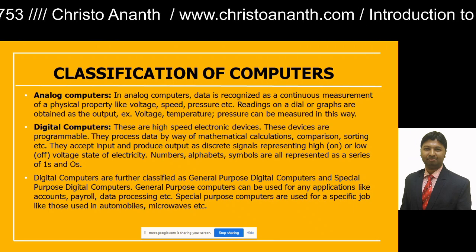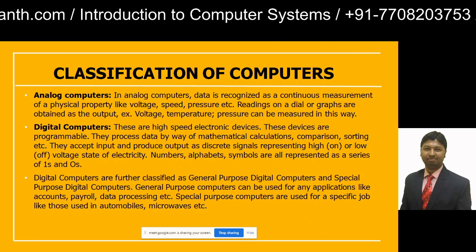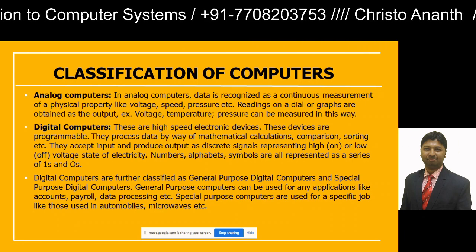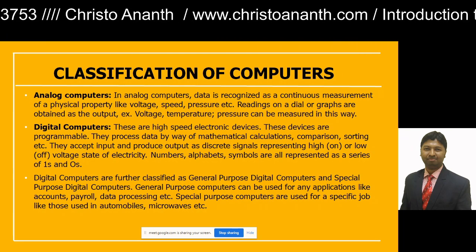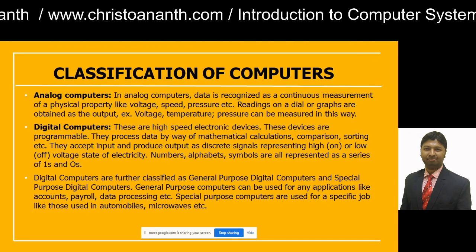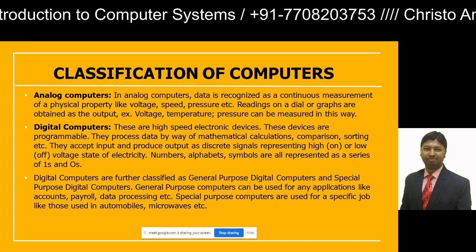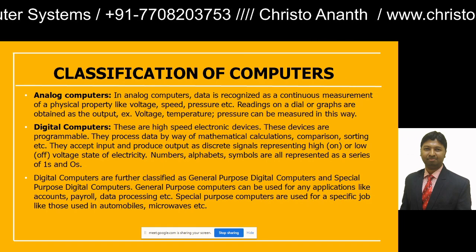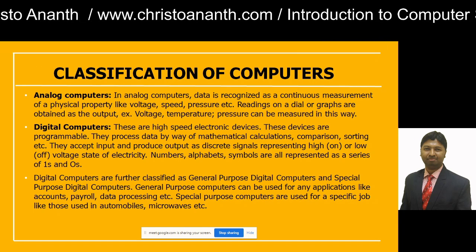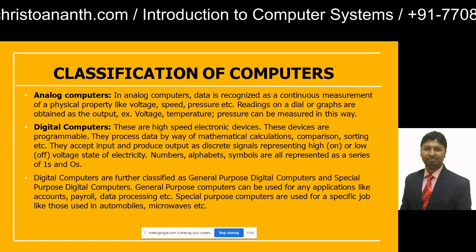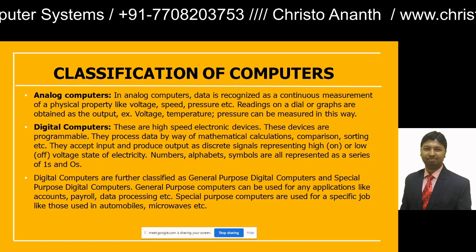We are going to start with the classification of computers. Computers are normally classified as two types: analog computers and digital computers. In the case of analog computers, you recognize data or perform computation with regards to physical properties, for example voltage, speed, pressure, or temperature. You get the readings on a dial or as a graph as output. So speed, pressure, voltage, or temperature can be measured using analog computers.